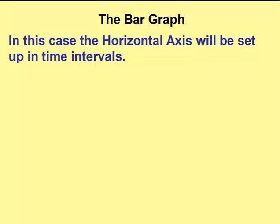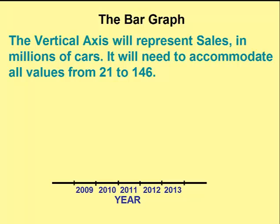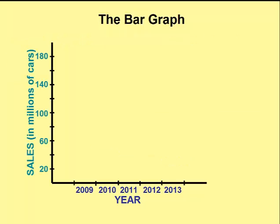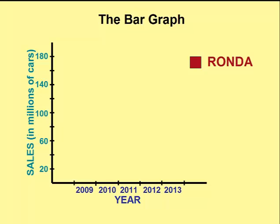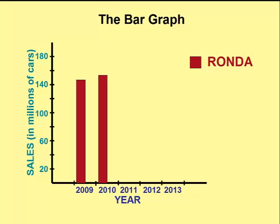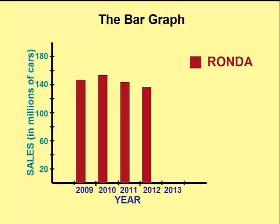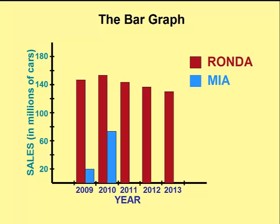The horizontal axis represents time and the vertical axis represents the number of sales. We use a red bar to represent Rhonda — the top of each bar indicates how many cars Rhonda sold that year, for 2009, 2010, 2011, 2012, and 2013. We make a bar for Mia using a light blue bar — in 2009 Mia sold 21 million cars, and similarly for 2010, 2011, 2012, and 2013. This lets us compare the two car companies side by side.